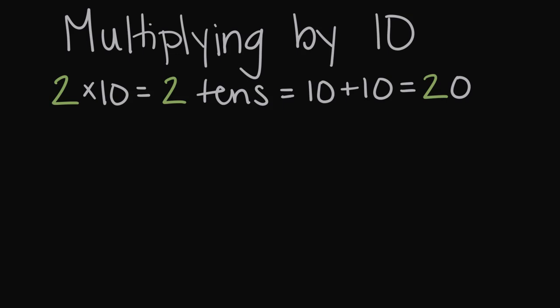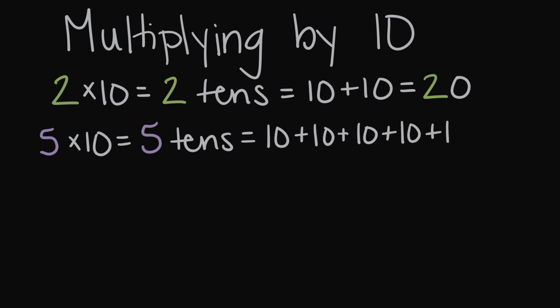Let's try one that's maybe just a little bit trickier. Let's try 5 times 10. 5 times 10 is going to be 5 tens, or one 10 plus another 10, plus a third 10, plus a fourth 10, plus a fifth 10.